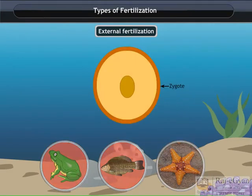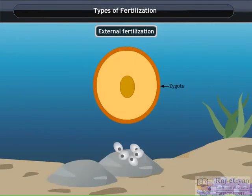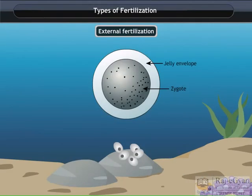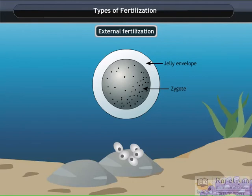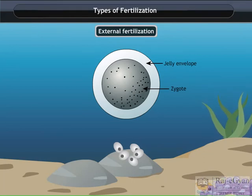In frogs, these are coated with a layer of jelly which protects it. The sperms are motile, they swim and reach the egg and fertilize it forming a zygote. This type of fertilization is called as external fertilization.